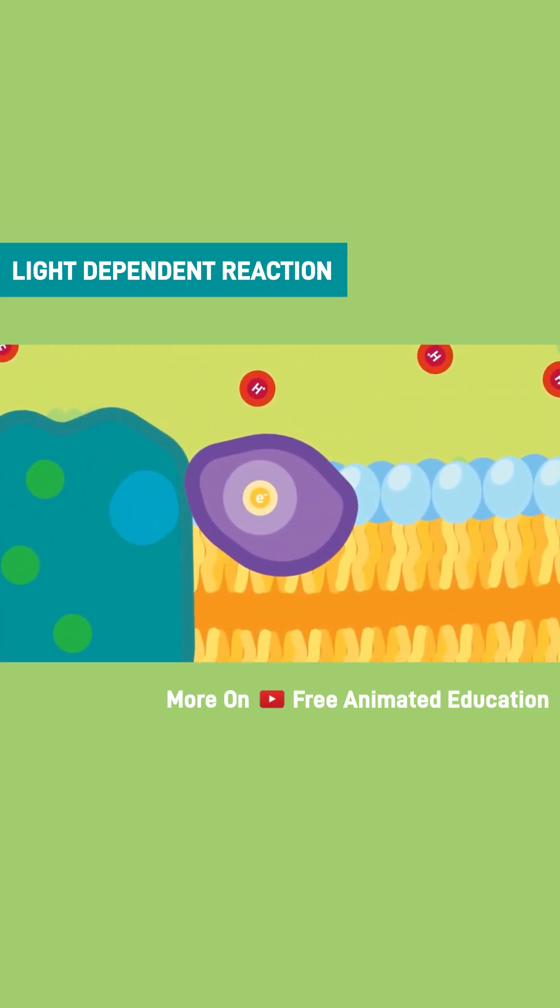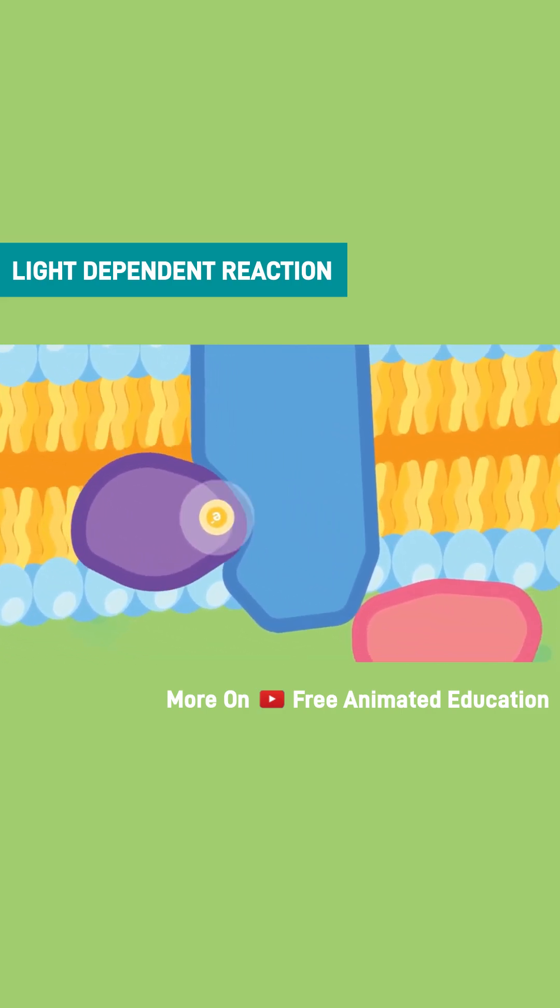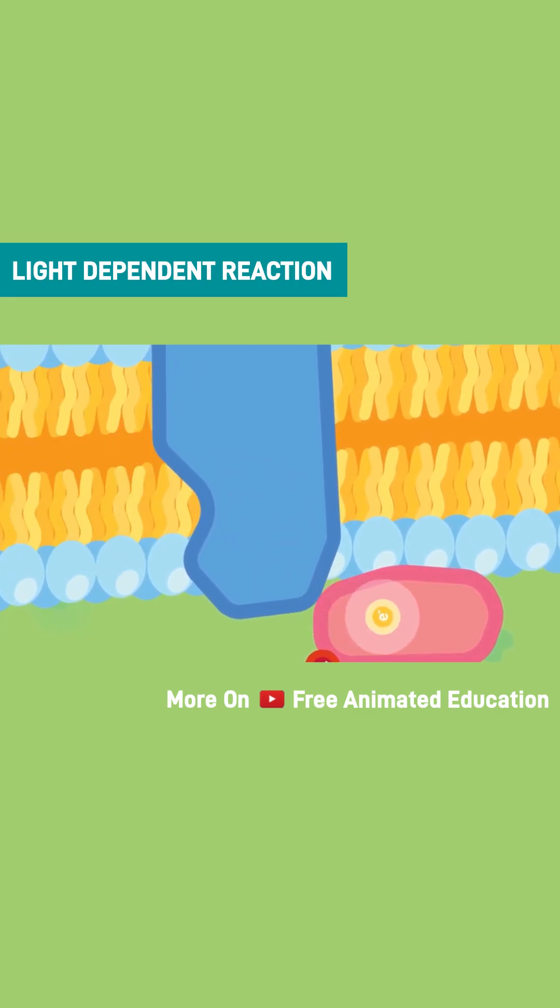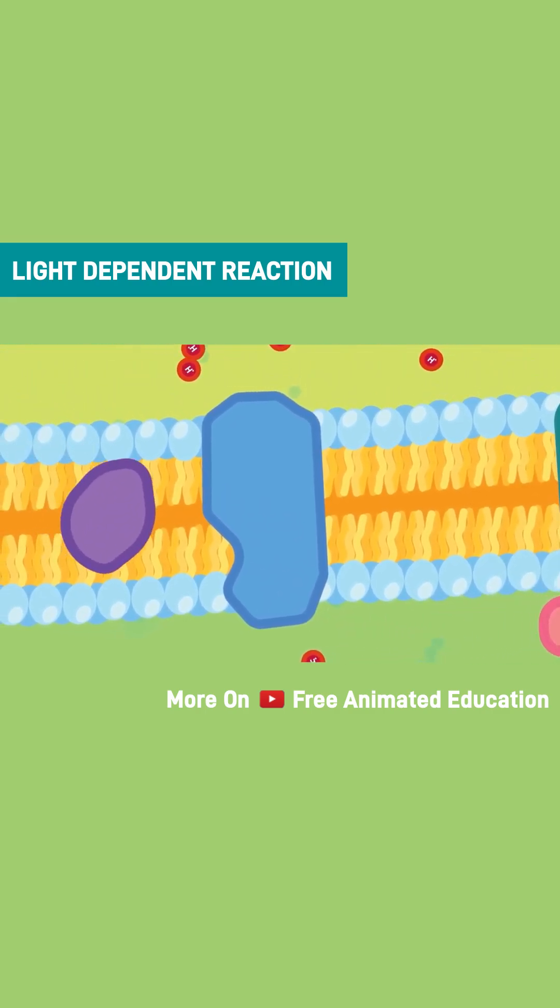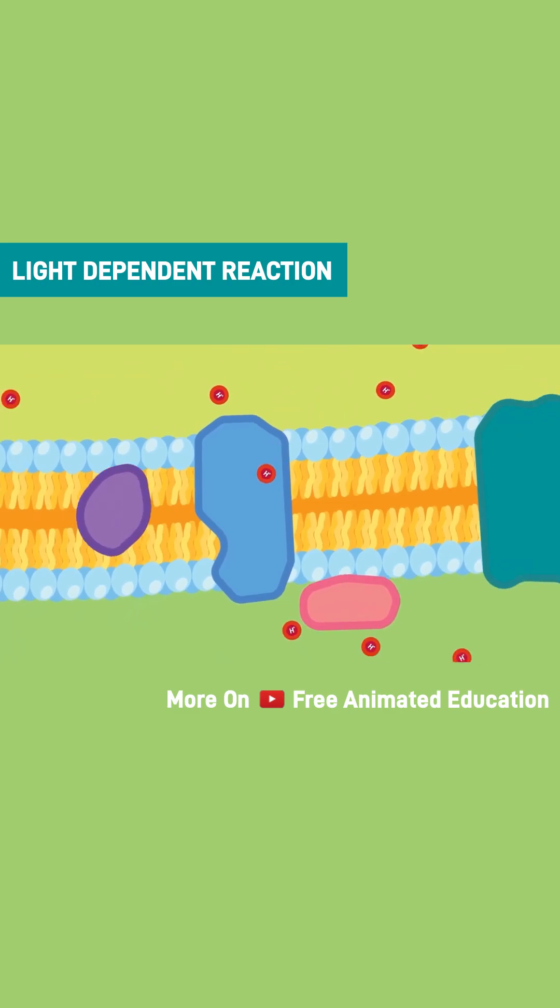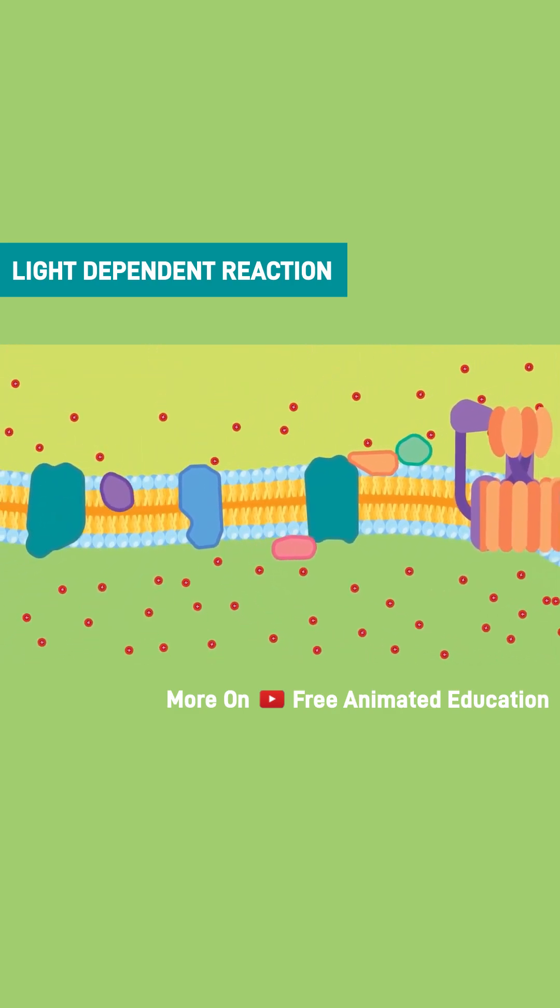The activated electrons then move through a series of electron carriers, also referred to as electron transport chain, and in this process leads to the accumulation of the hydrogen ions generating a proton gradient inside the thylakoid compartment.